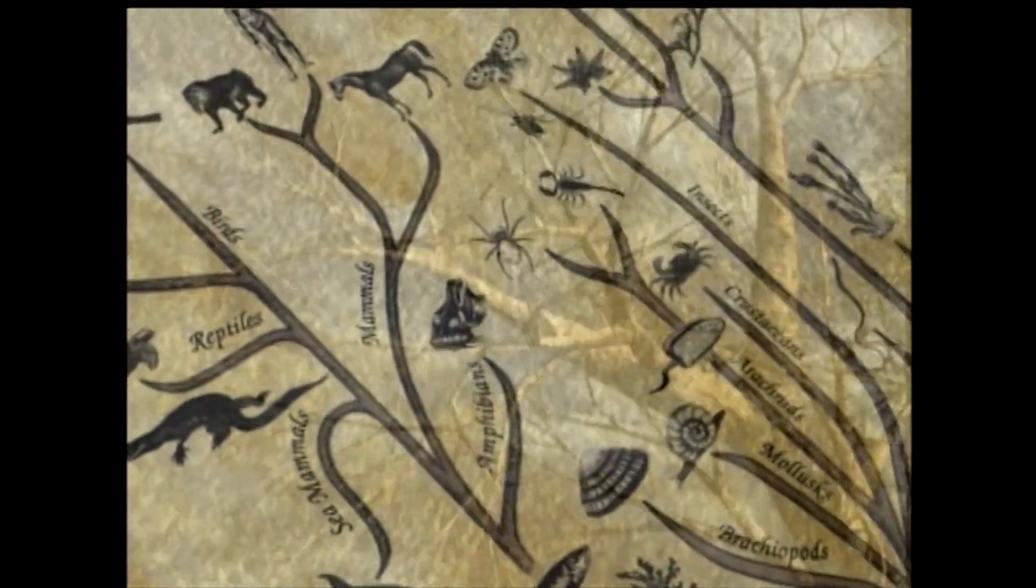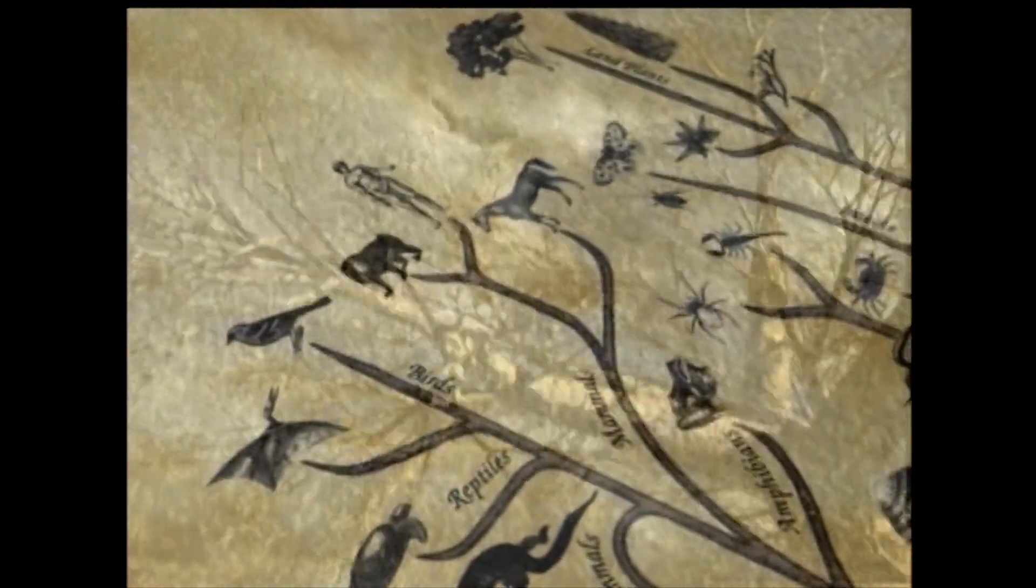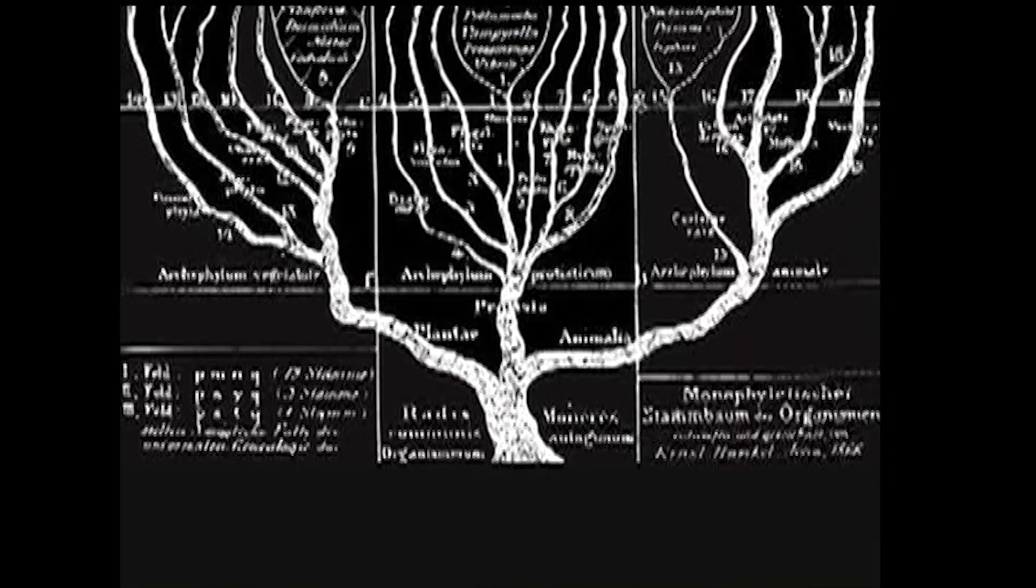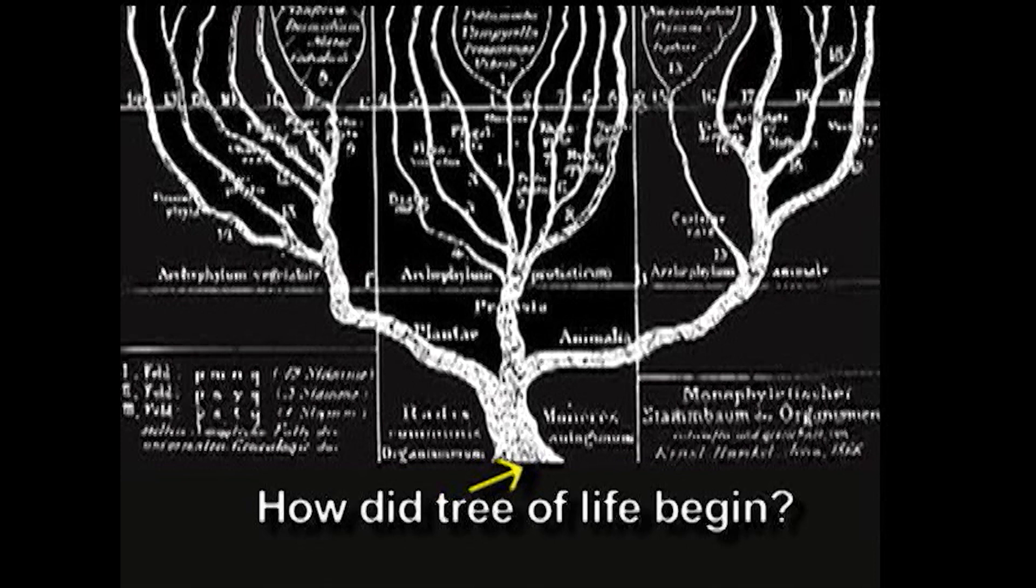The idea in Darwin's theory is that new forms of life arise by a gradual evolutionary process that converts simpler pre-existing forms into those complex forms we see today. The simplest form, where the whole process starts, is represented by the trunk at the base of the tree.